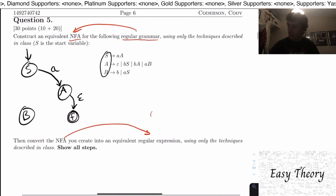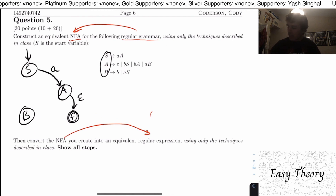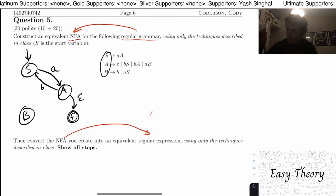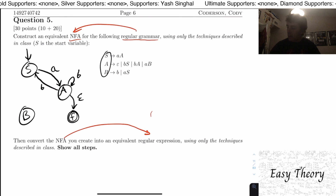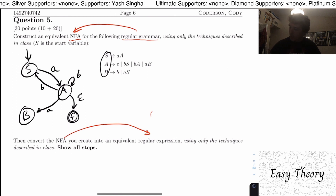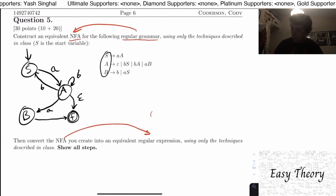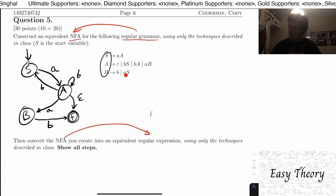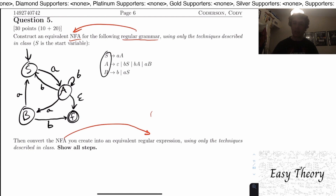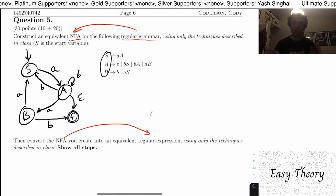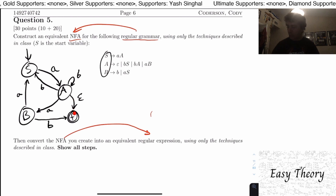Let me zoom in. Now let's handle the other rules: A goes to bS, so we go back to state S on input b. A goes to bA — that's a self-loop on b. A goes to aB, so we go to state B on a. For state B: B goes to b with no variable, so we go to the final state on input b. B goes to aS, so we go to state S on input a. We can't make S, A, or B final because that would imply a variable is still in the derivation.